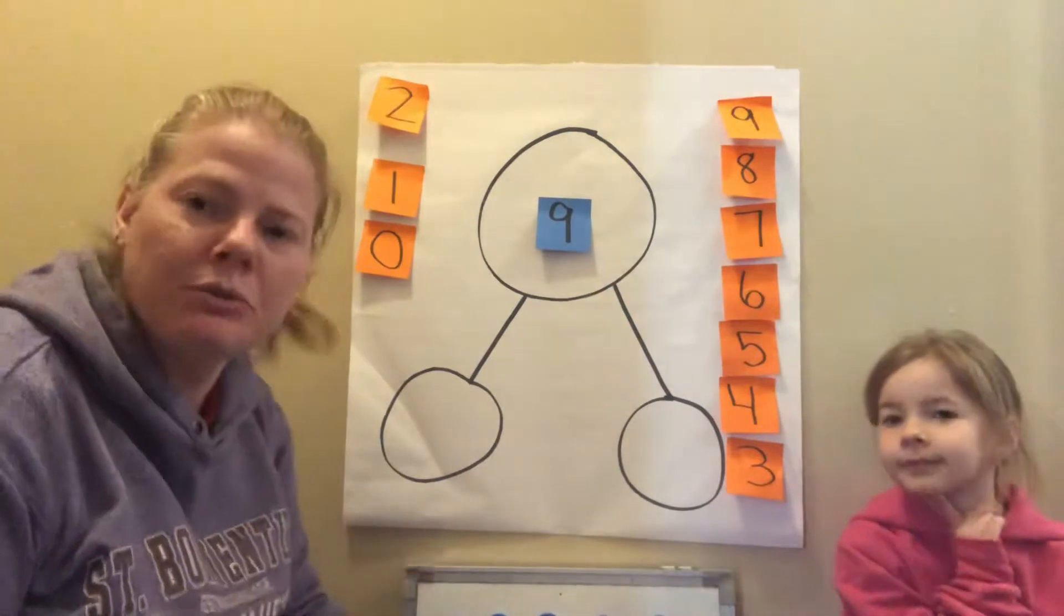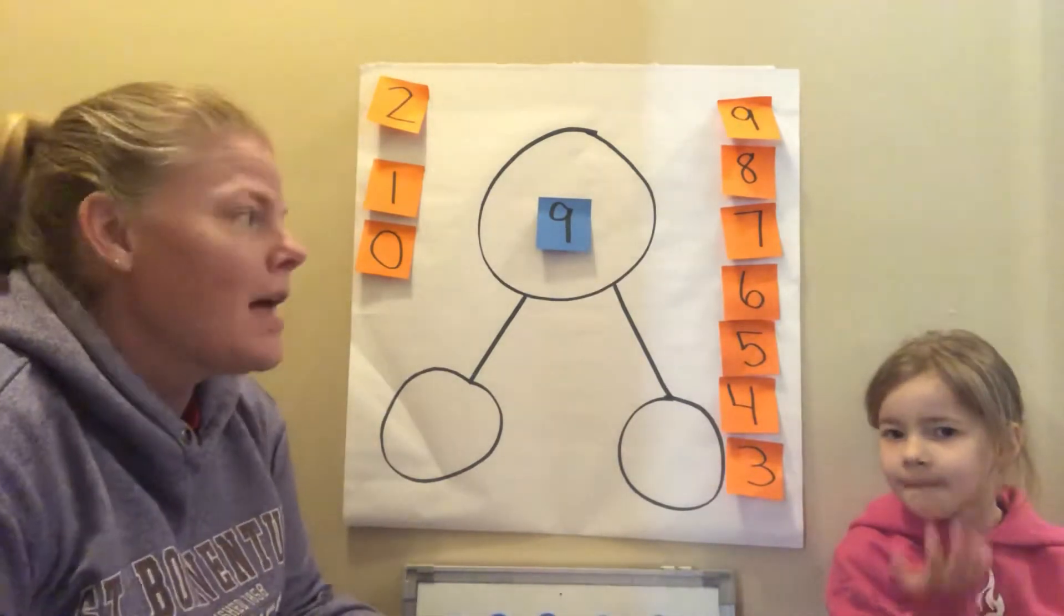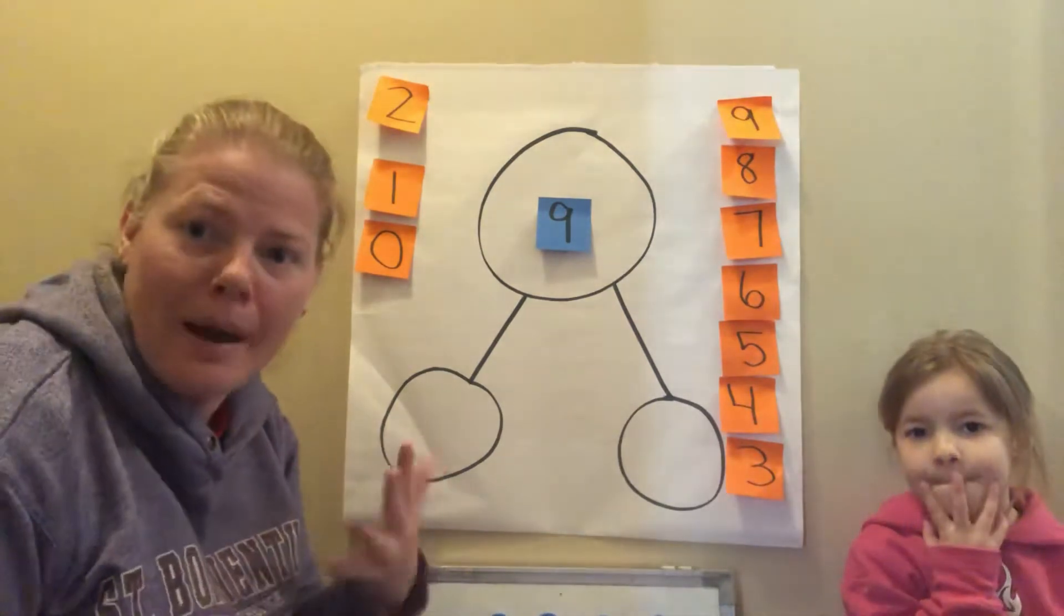And then you'll need a cup so that mom and dad can hide some of those counters and you have to figure out what the two parts are of nine. We're gonna do an easy one first. I'm gonna let Shelby show you how we do it, and then we'll do a couple more. We'll go a little faster and then you can play the game with your moms and dads.